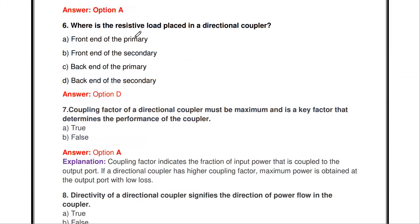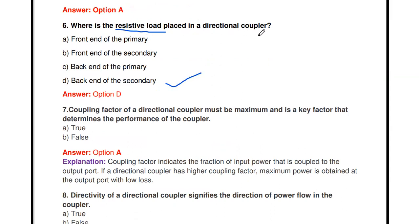Next question: where is the resistive load placed in a directional coupler — front end of primary, front end of secondary, back end of primary, or back end of secondary? The resistive load is placed at the back end of the secondary in a directional coupler.